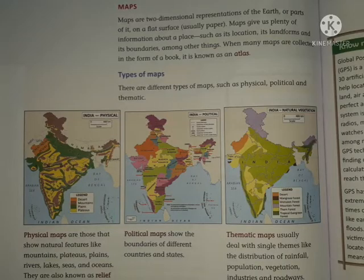Maps are a two-dimensional representation of earth. They give us plenty of information about a place, such as location, landforms, or boundaries. Maps are collected in the form of a book known as an atlas. There are certain types of maps: physical, political, and thematic maps.